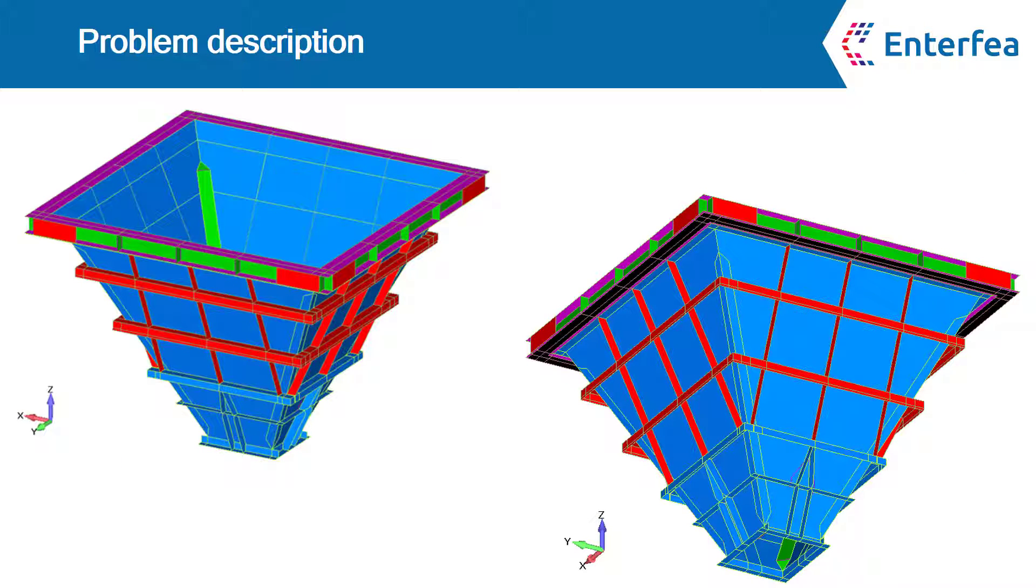You can see here the geometry of the hopper. From today's topic standpoint, the most important fact is that the hopper stands on the concrete slab, or to be more precise on the steel plate embedded in concrete.